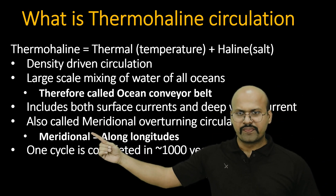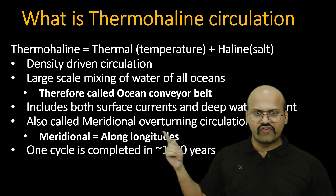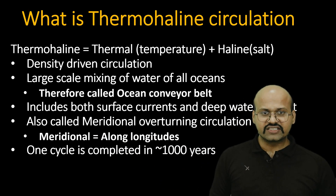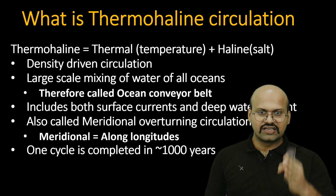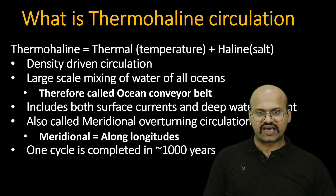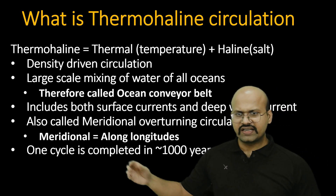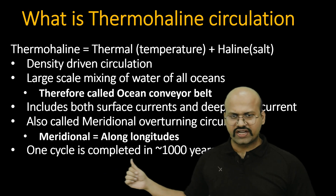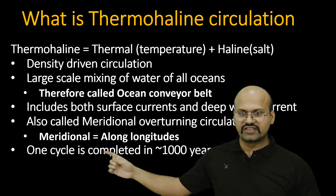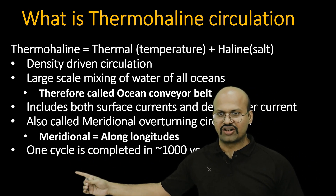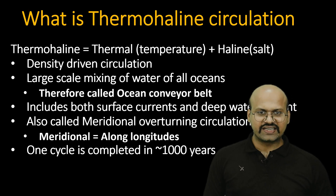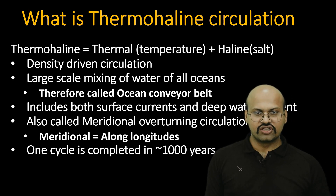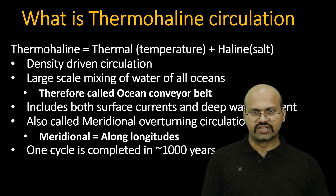Thermohaline circulation is also called meridional overturning circulation because for most of its path this circulation flows in the longitudinal direction. It takes around 1000 years for one cycle of this circulation to complete, so it is a very slow circulation.